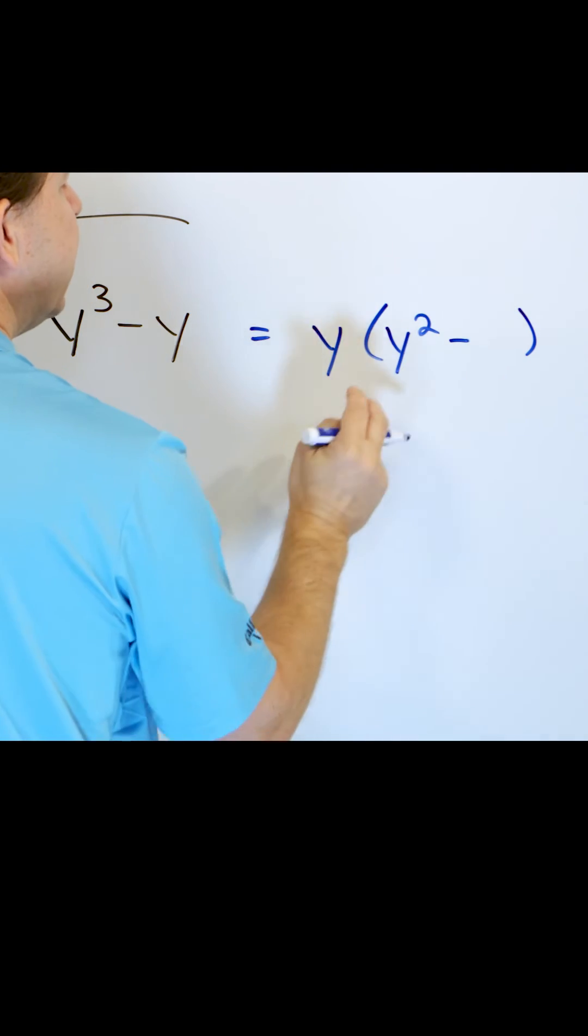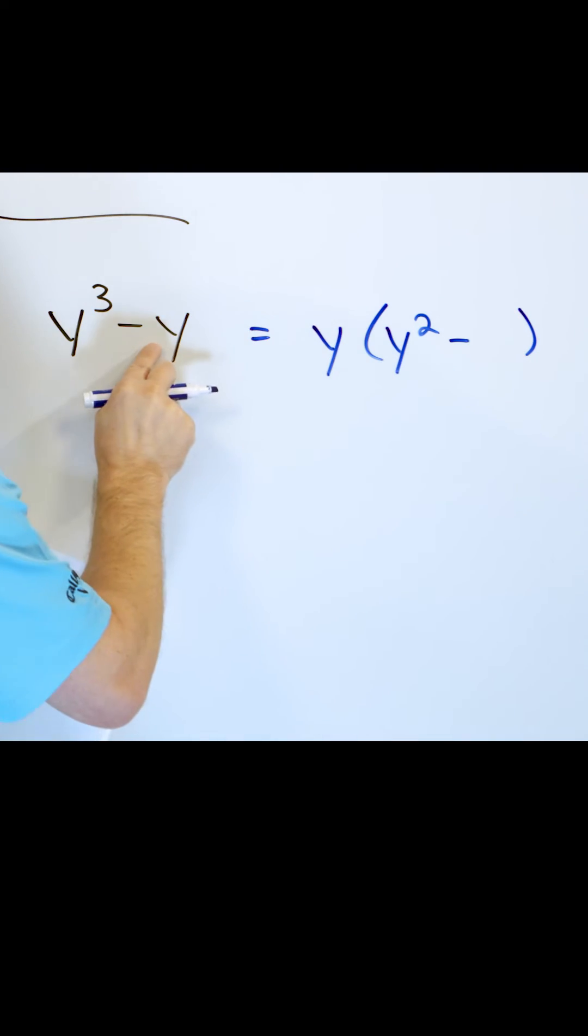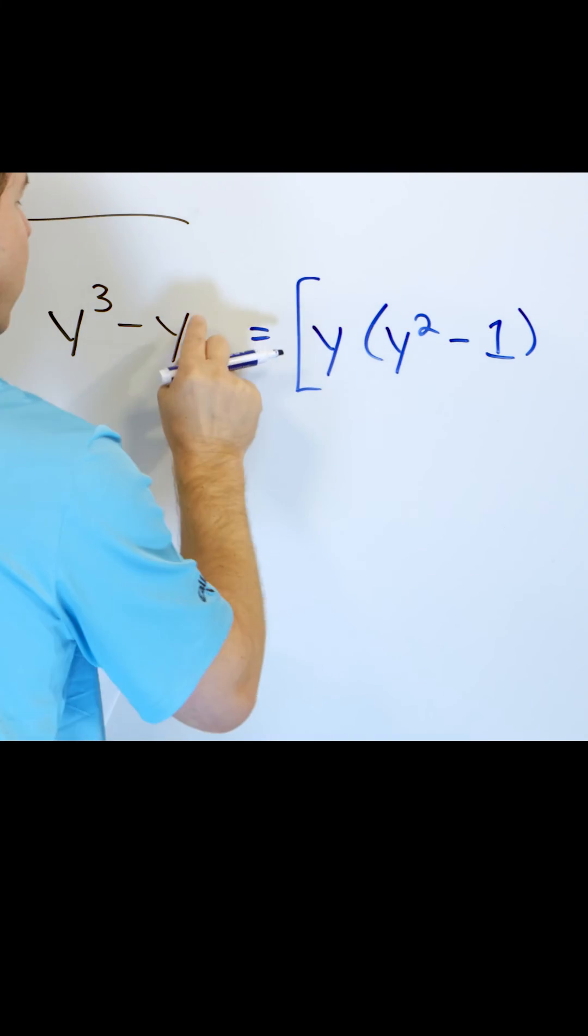Then I link it with a minus sign and then y times something is y and you have to put a one here. And so this is the answer. And you can always verify it's true because y times y squared is y cubed minus y times one is y.